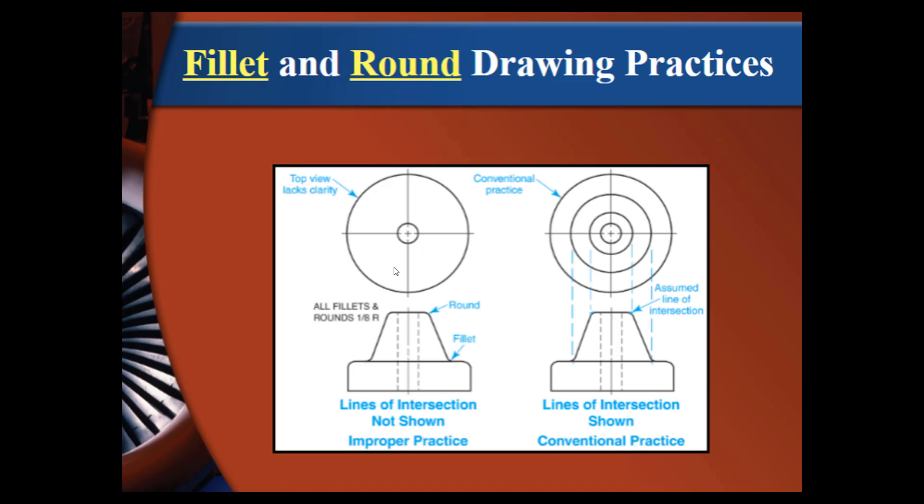Fillets and round drawing practices. The one on the left is the improper practice. Even though there is not a distinct line where that fillet meets at the bottom with the base, we need to still show a representation of that line. So the one on the right is the standard way to do it and the one on the left is the incorrect way to do it.